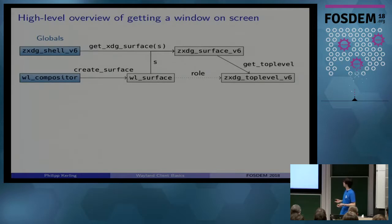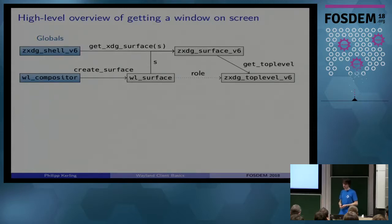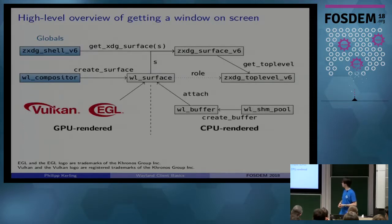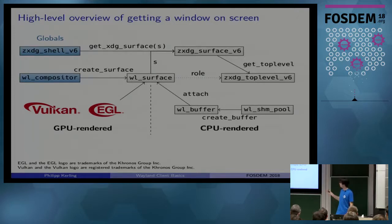The compositor won't put the window on screen unless you put some content into it. There are two possibilities: you can render on the GPU or render on the CPU. If you render on the GPU using Vulkan or EGL, you're pretty much covered — it's quite easy to do and the interoperability is great.